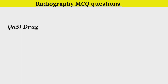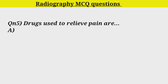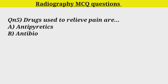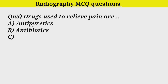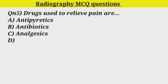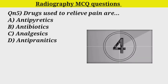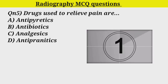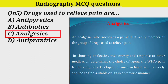Q5. Drugs used to relieve pain are: Option A. Antiprolactics. Option B. Antibiotics. Option C. Analgesic. Option D. Anti-psychotics. Correct answer is Option C. Analgesic.